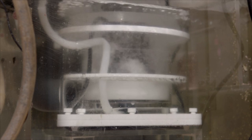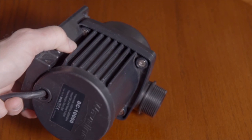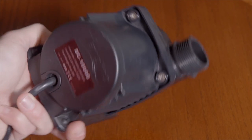The DC 10,000 can be used internally, submersed, or externally, in line. The pump has four titanium screws, which seal the pump body to the front.